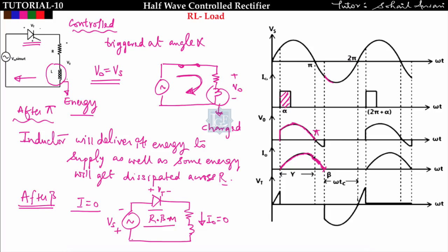When the thyristor goes into reverse blocking mode it stops conducting, and the thyristor voltage VT follows the supply voltage. This continues until the next firing pulse at 2π plus alpha. The circuit turn-off time is defined as the time for which the thyristor is in reverse blocking mode — from beta to 2π — so ω·tc equals 2π minus beta, giving tc equals (2π minus beta) divided by omega. From 2π to 2π+alpha it is in forward blocking mode, which is not included.